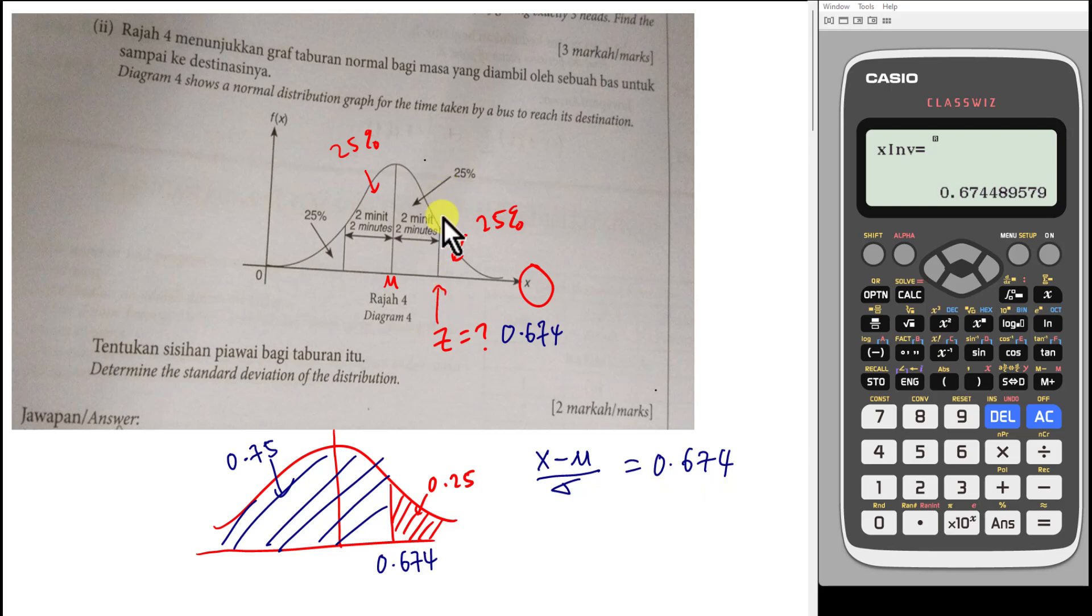What is the x value for this line? This line, I already know the z value is 0.674. But the x value from my observation, this one is mean, right? From mean I plus 2. So this line, the x value is...